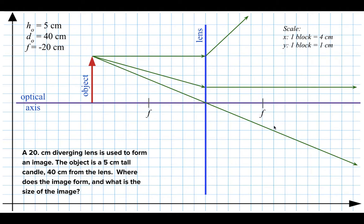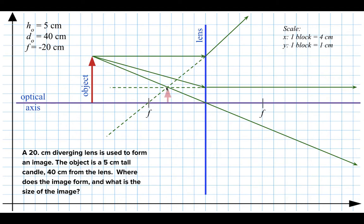Looking at these three rays of light, they clearly diverge and will not intersect on the right-hand side of the lens. So we trace them back to their apparent point of origin — if you saw these rays going in those directions, you'd ask where they seem to be coming from. Take each ray and extend it backwards with a dotted line. All three appear to diverge from a single point, which we call a virtual image. It's virtual because the light rays don't actually cross there — they just appear to originate there. The object appears as a smaller object closer to the lens.